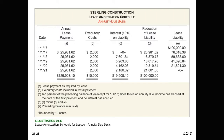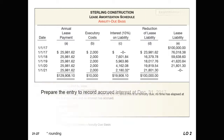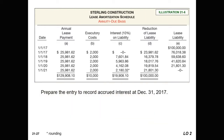The graphic shows you how to create this spreadsheet for yourself. We then prepare the entry to record the accrued interest on December 31, 2017. After a full year of accrued interest, we record interest expense of $7,601.84 and interest payable of $7,601.84.